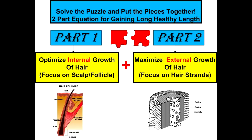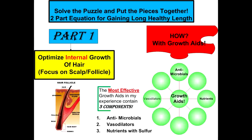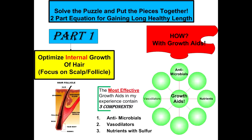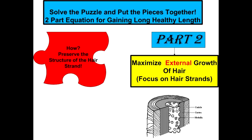Today I want to talk about two parts of the equation for gaining length on your hair. Part one is optimizing your internal growth — I'm talking about topical applications of growth aids to the scalp and hair follicles, as well as perhaps taking something internally. The second part of the equation is maximizing the external retention of hair when we are trying to grow it out.